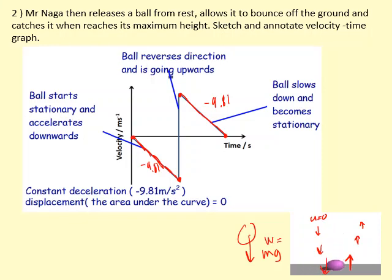The area here represents the height it's fallen by, and the area here represents the height it's gone up by. So it should be 0, it should add up to 0. Obviously, in reality, some of the energy will be lost when it hits the ground. So technically, this area should be smaller because it won't return to its original height because it's lost some energy.